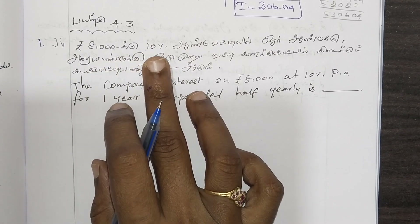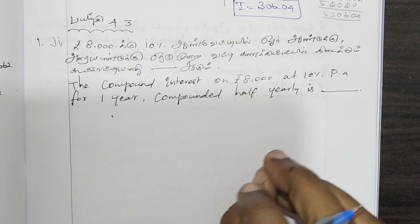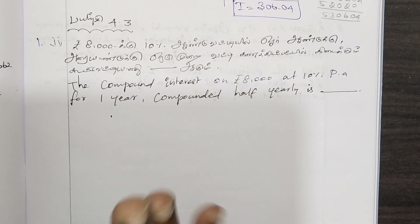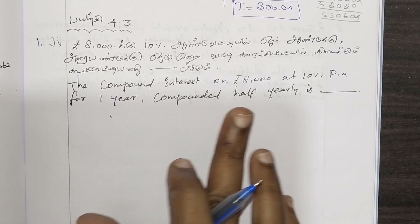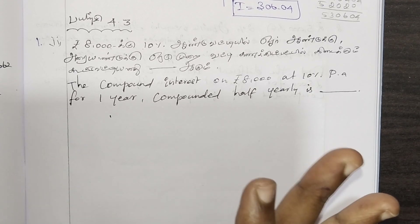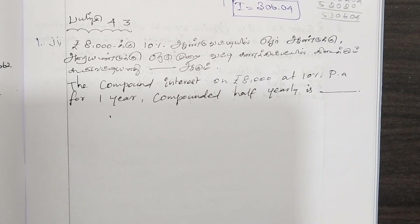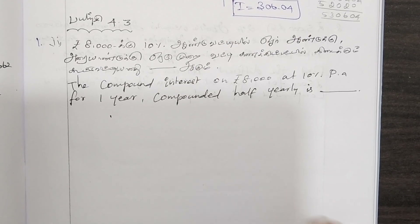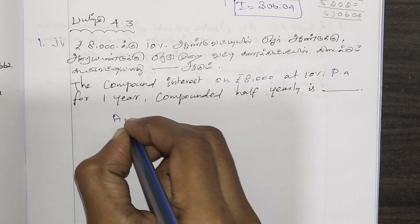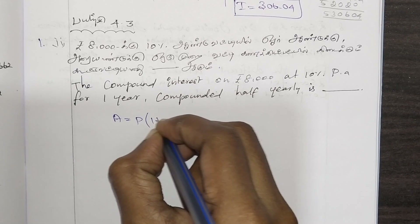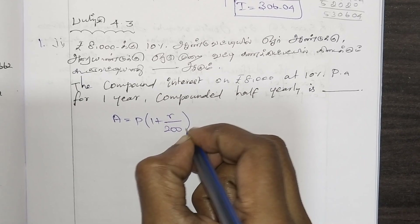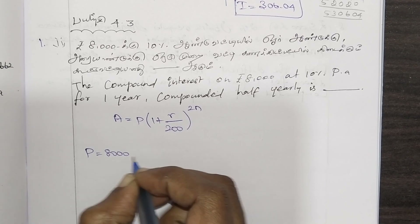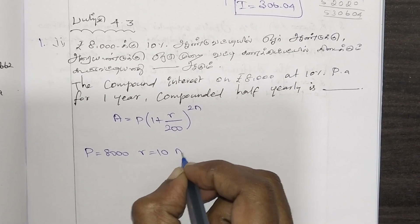Now for the next problem. The rate of interest is 10%, this is compounded half yearly, so N plus 1 applies. Given: P is 8000, r is 10, n is 1. We substitute into the formula A equals P into 1 plus r by 200, whole power 2n.